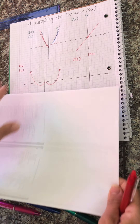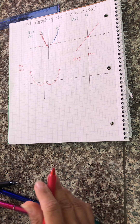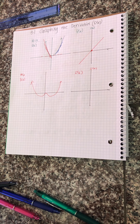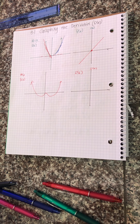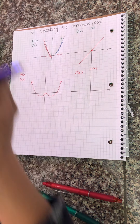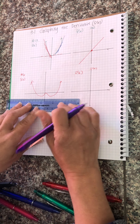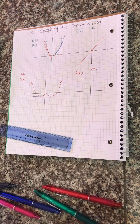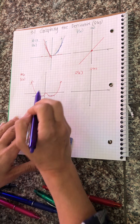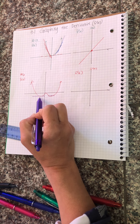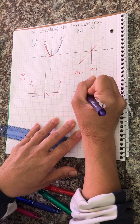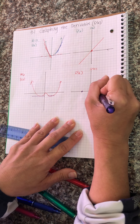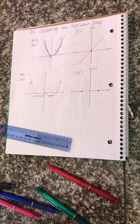Let's look at number 16, which has this really funky graph. I think it's easiest if you start where the slope of the tangent is 0. For number 16, the slope of the tangent is 0 at this point and at this point. So when x is negative something, the slope is 0, and when x is positive something, that slope is 0. I think it's supposed to be symmetric.